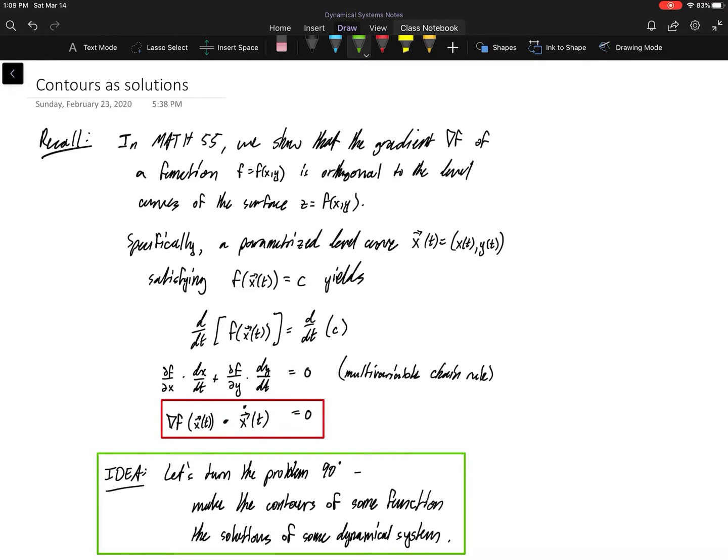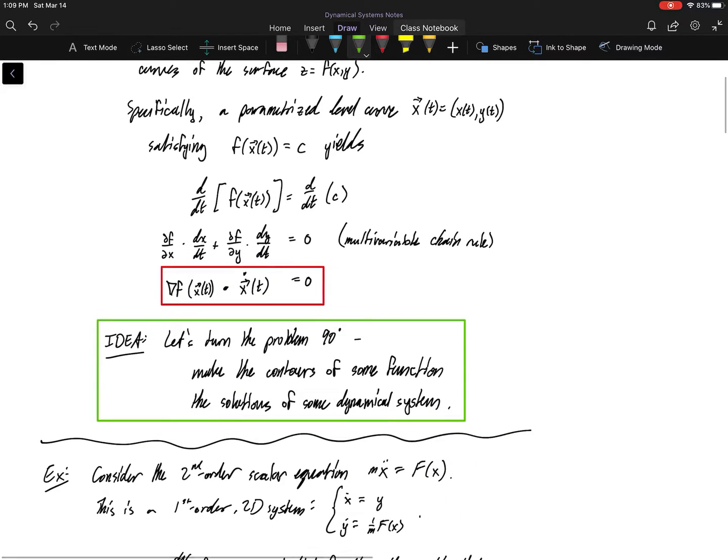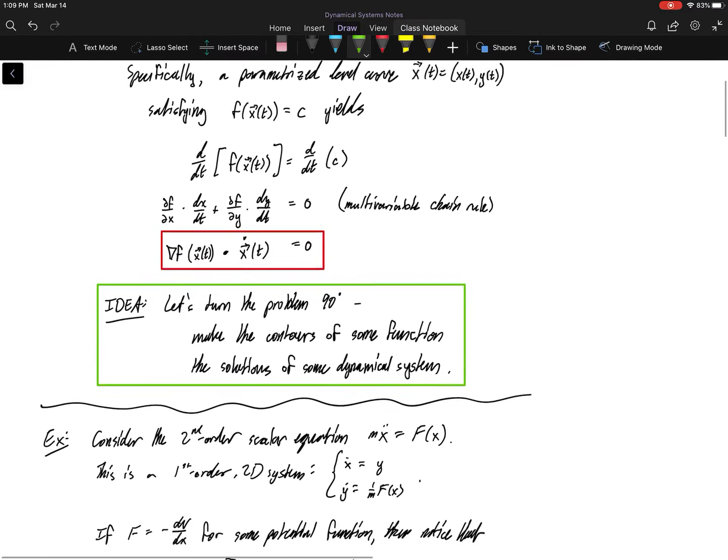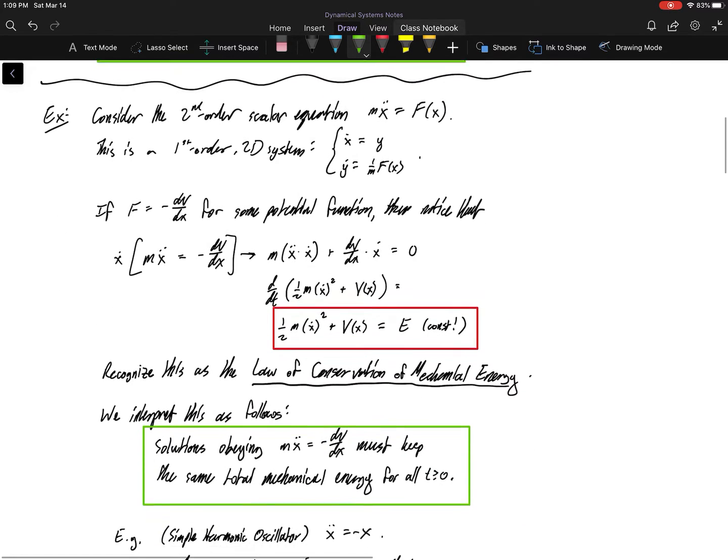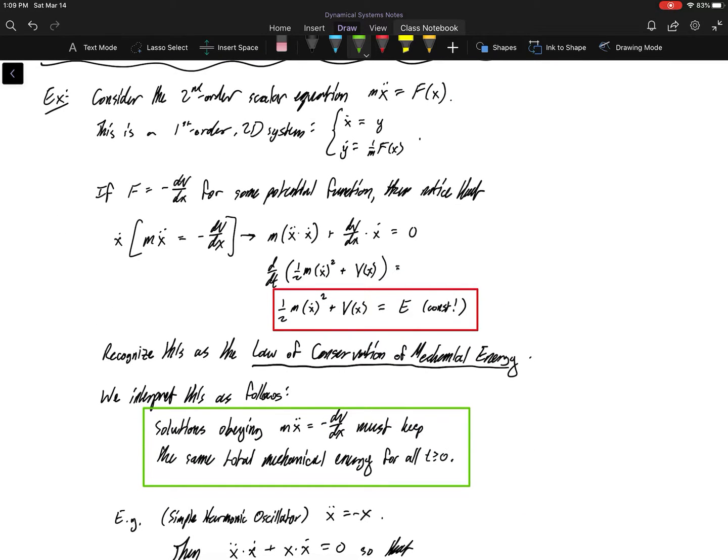And the gradient you could show would be perpendicular, orthogonal to the solution's direction. So in other words, we wanted to create this idea of an energy function whose contours were the solutions to a particular system, x dot equals f of x.